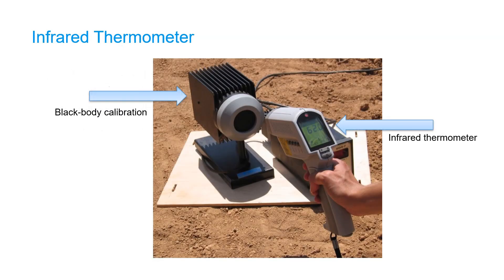Let's first look at infrared thermometers. These are thermal infrared sensors that don't result in an image, but you can read the temperature of an object from the LCD screen. It has a guiding laser that helps you to see which object you're reading the temperature from. You need to correct the temperature that is read with the emissivity value, which you can set on the device. Also these sensors can be calibrated using a black body calibration device that you see on the picture.